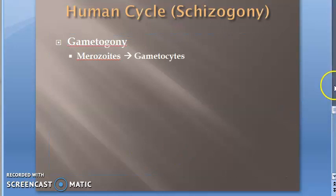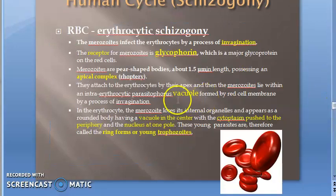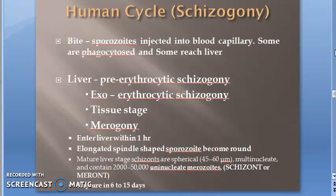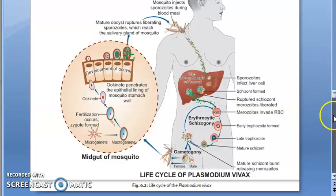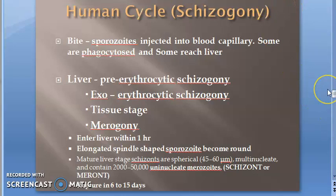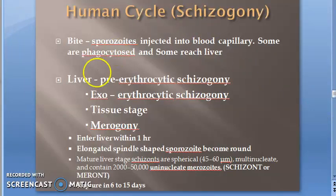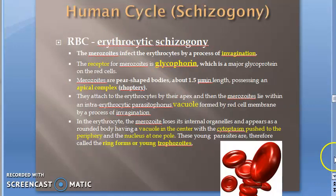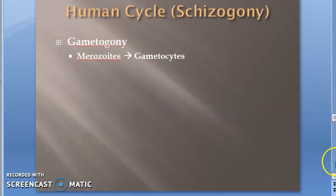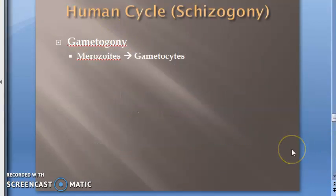To revise what we have seen: the human cycle is called schizogony, and the mosquito cycle is called sporogony. Within the human cycle, we covered two types of schizogony — pre-erythrocytic schizogony and erythrocytic schizogony — and introduced gametogony. Please take some rest and come back for the next video.